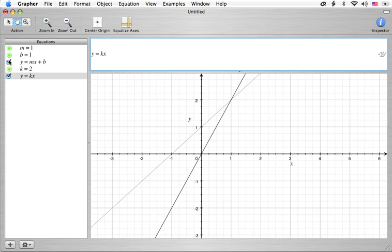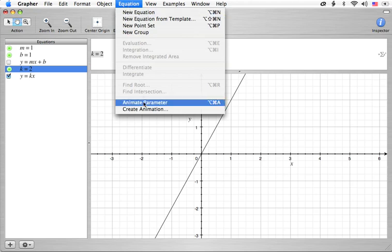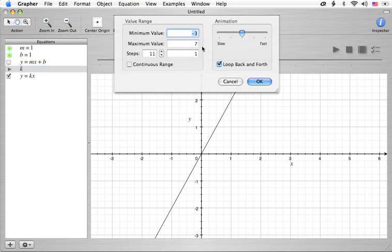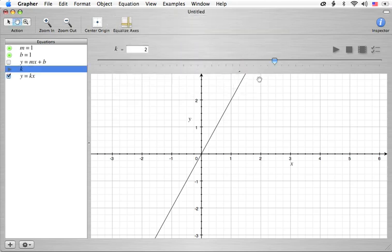We'll show you what this one looks like. I'm going to turn off y equals mx plus b. We're going to highlight the k equals 2. We're going to come over to equation. We're going to animate that parameter. And we're just going to take a quick look at the settings here. We're going to change the settings to minus 8 to 8. Let's really go for it today. And we're going to go by 41 steps. Let's hit the OK button, and we're ready to rock and roll.